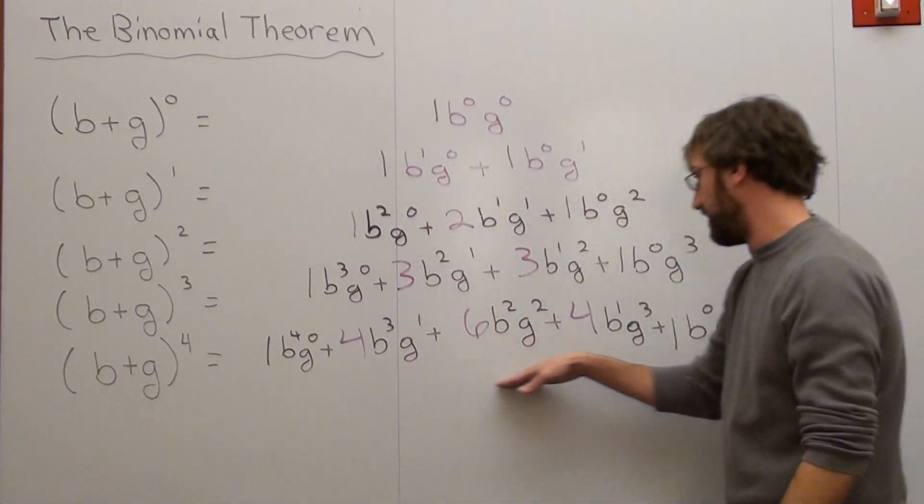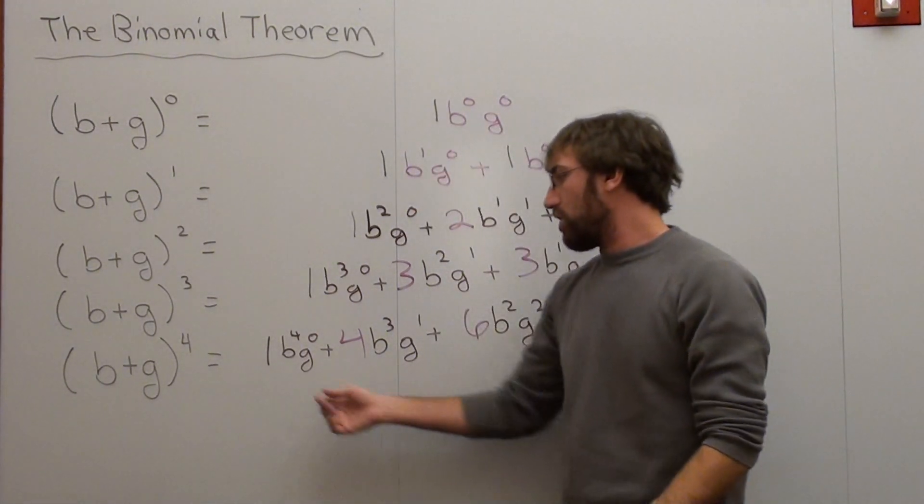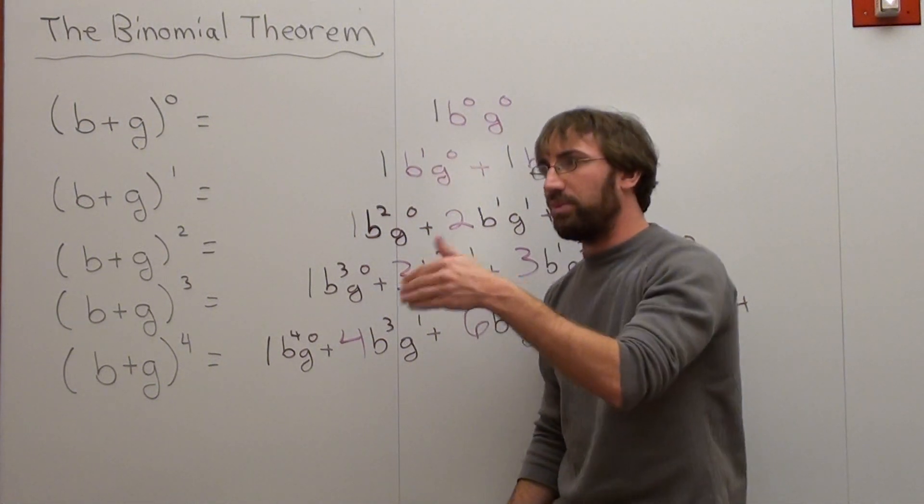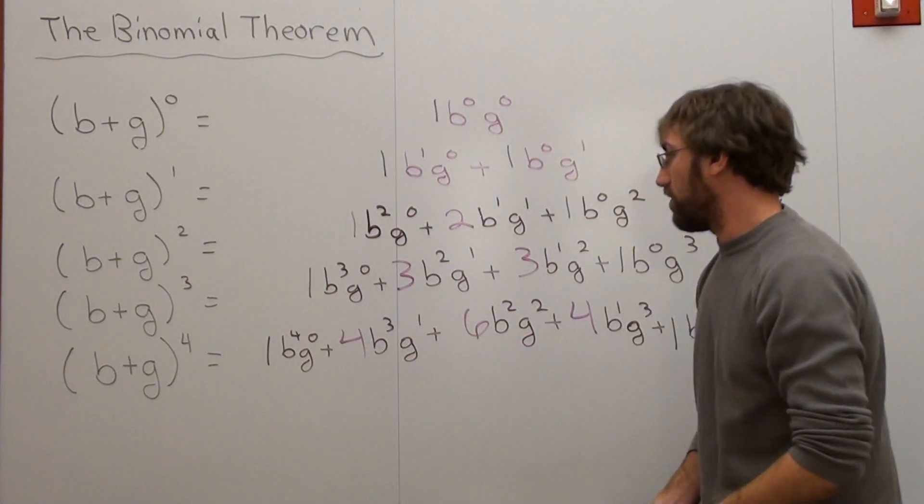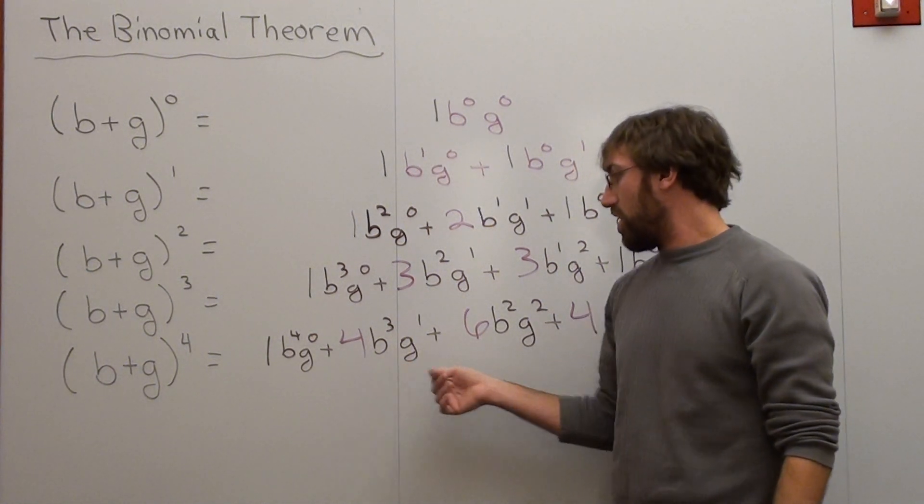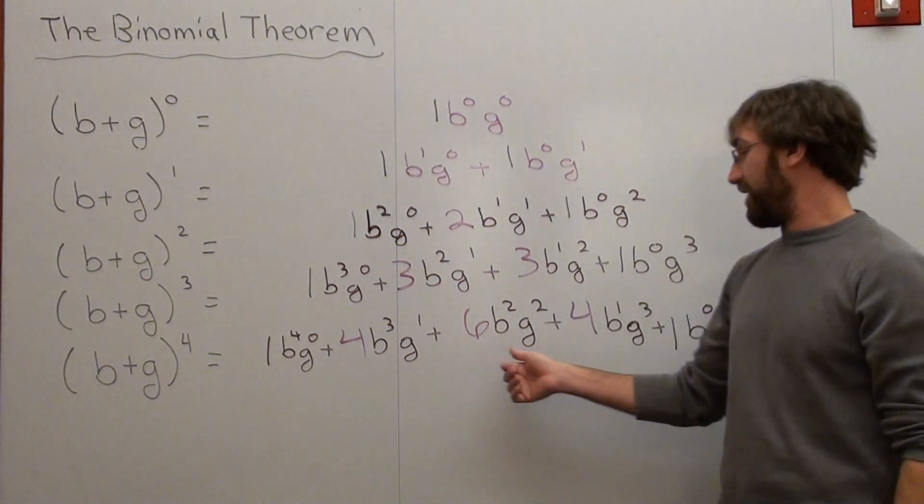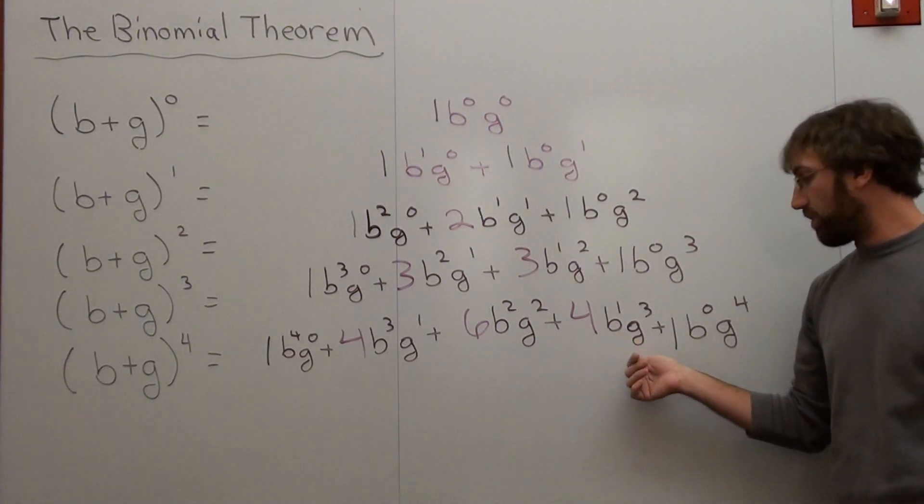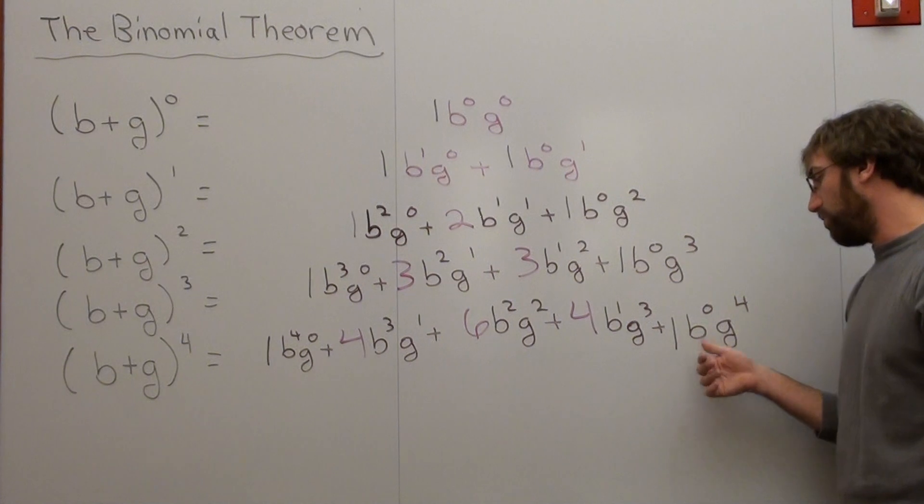And it expands to this. And what's really interesting is there's one way you can have 4 boys and no girls. Boy, boy, boy, boy. There's 4 ways that you can have 3 boys and 1 girl. There's 6 ways you can have 2 boys and 2 girls. 4 ways you can have 1 boy and 3 girls. 1 way you can have no boys and 4 girls.